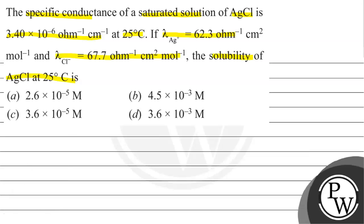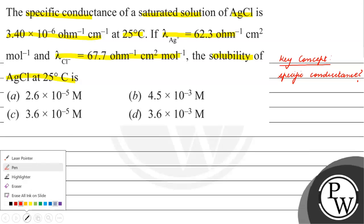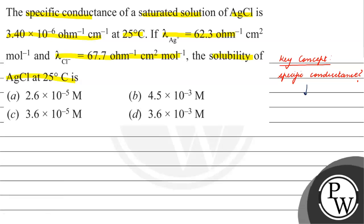Before starting this question, let us see the key concept. What exactly is specific conductance? Specific conductance is the measure of a material to conduct electricity.